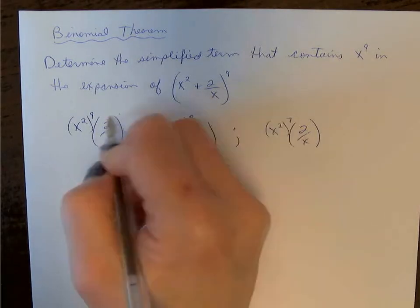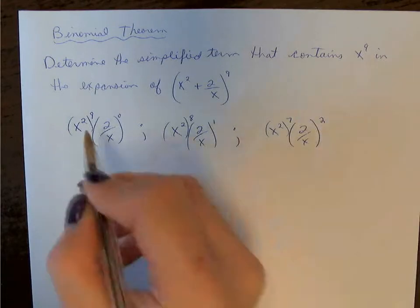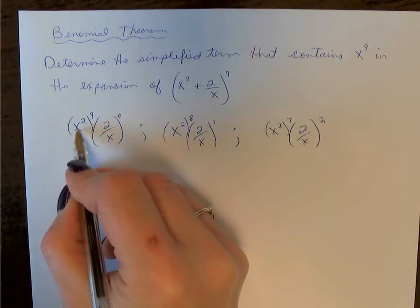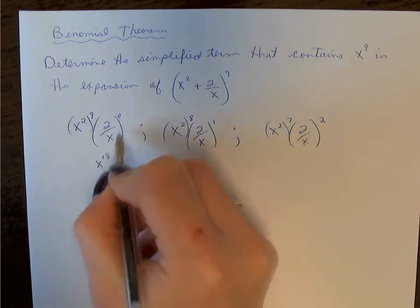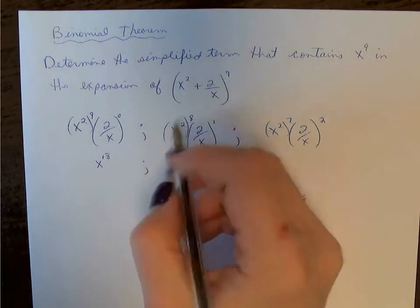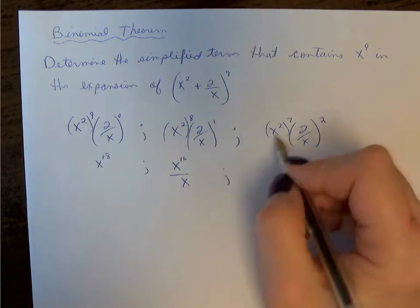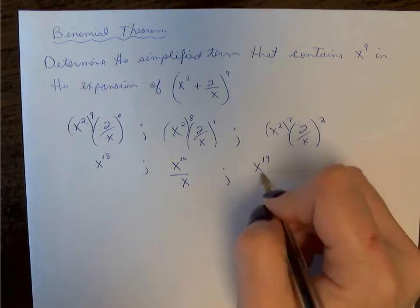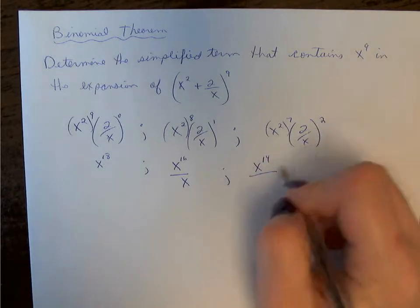On the second term in the binomial, we always start with 0 and count up. Let's evaluate our exponents. x squared to the 9th power gives us x^18. Anything to the exponent 0 is 1. We have x^16 over x, and here we have x^14 over x squared.